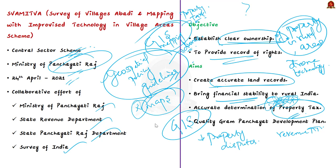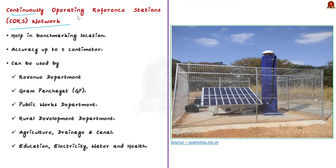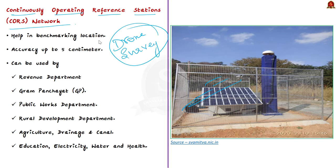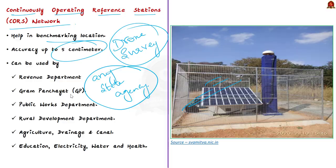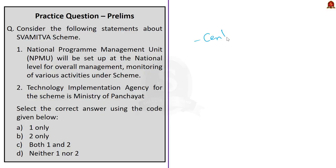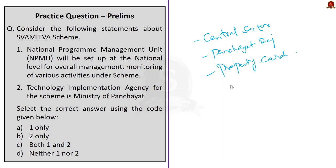One key feature of SVAMITVA is the CORS network — Continuously Operating Reference Stations. Demarcation of area is done using drone survey and CORS networks. These reference stations help in benchmarking location and provide five-centimeter level accuracy. Once established, they can be used by any state agency — revenue department, gram panchayat, PWD, agriculture department, electricity department, and others. SVAMITVA issues property cards to owners, creates accurate land records, and aims to bring financial stability to rural India.